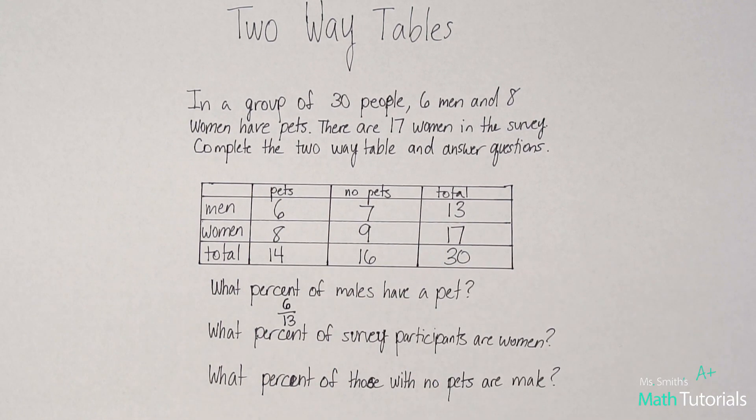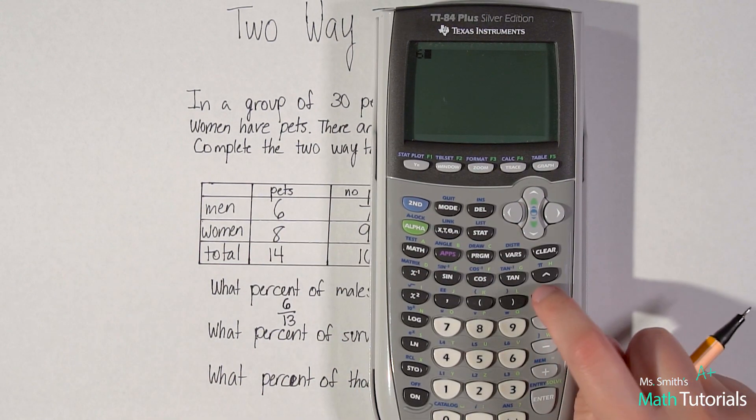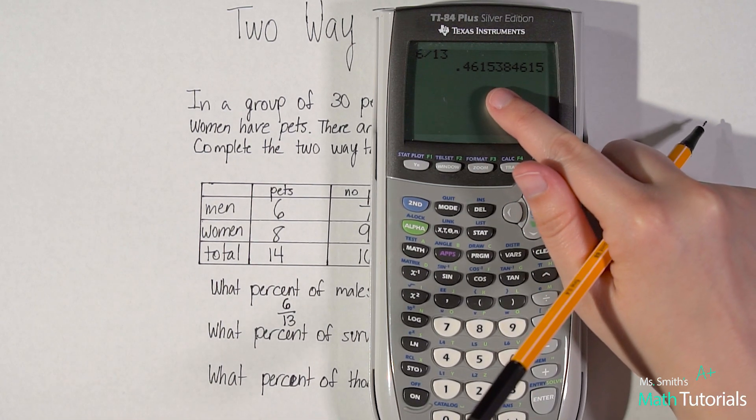And then I would simplify this. I would do six divided by 13. And it'll be a decimal. I want to turn that decimal into a percent.